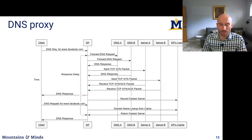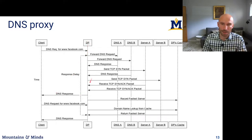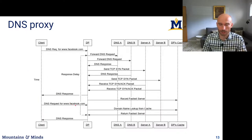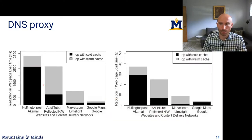Even though this extra measurement step adds some time to DNS resolution, the benefit of finding the closest CDN server still saves overall time in terms of web page load time. Clients send multiple subsequent requests to that CDN server, so choosing a better server pays off. We compared warm cache versus cold cache approaches — whether we resolve fresh every time or use the DNS proxy cache — and both show improvements in web page load time across different sites.